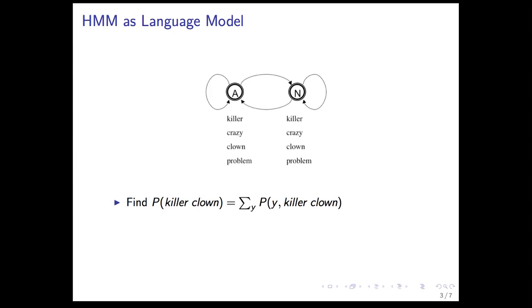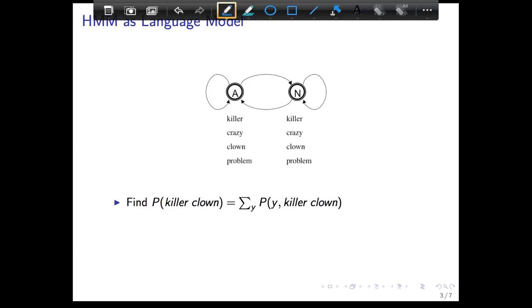In the case of HMM as a language model, we want, like any other language model, to be able to get the probability of a sequence of words. So what's the probability of 'killer clown'? We're given HMM, so we're given all of these probabilities like start, transition, and emission probabilities.